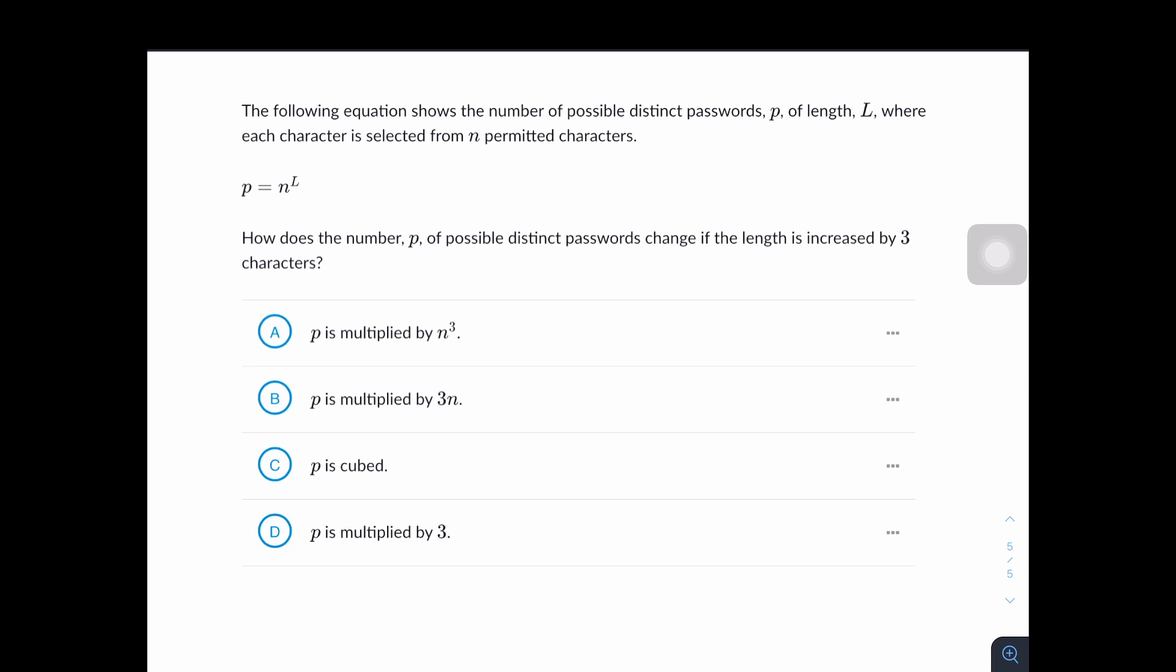So it's asking us how P is going to be affected if L is increased by 3. So L is increased by 3. This is the new expression. And we can use the product of powers property of exponents to rewrite this as n^L times n^3.